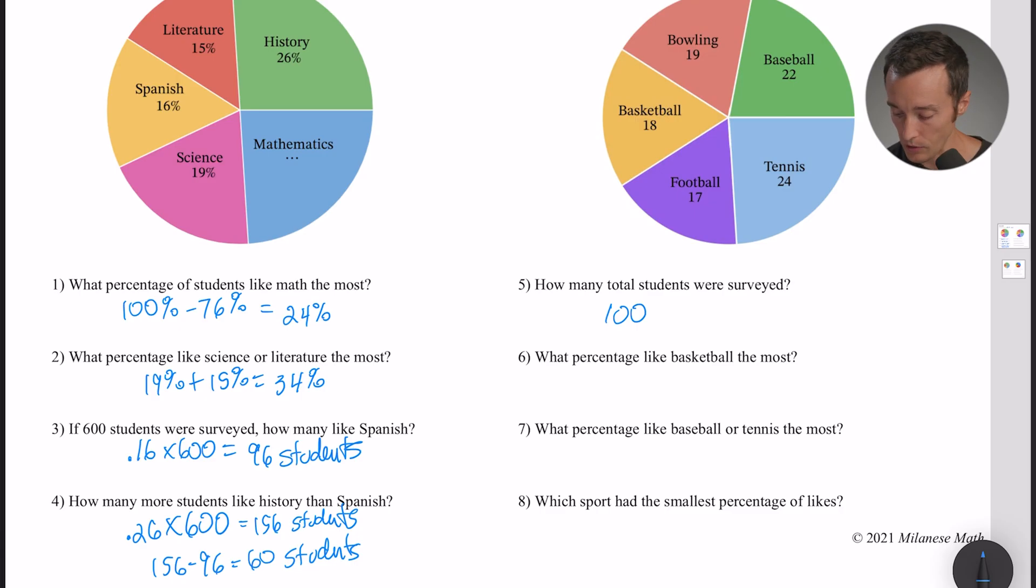Now we can use that to help us answer number six - what percent like basketball the most? Well, 18 of them did, right? So it's kind of like saying 18 out of 100. Now remember, if you want it as a percentage you always have to multiply by 100. So 18 divided by 100 times 100 is 18%, so 18%.